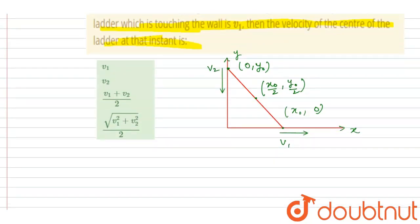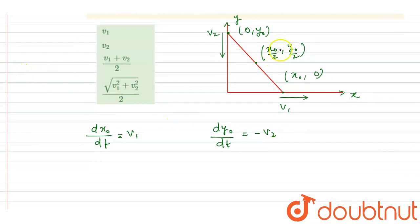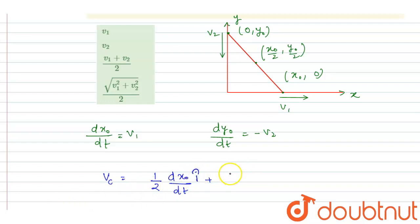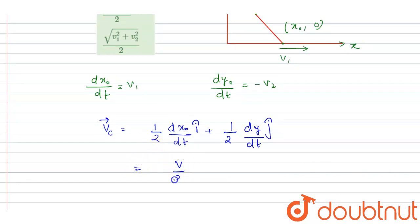To calculate the velocity of the center, we know that the rate of change of x₀ is equal to v1 and the rate of change of y₀ is v2, but in the downward direction, so we put a negative sign. The center moves with half of these velocities along the x and y axes. So the velocity of the center is (1/2)(dx₀/dt) î + (1/2)(dy₀/dt) ĵ, which gives v1/2 î minus v2/2 ĵ.